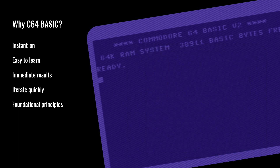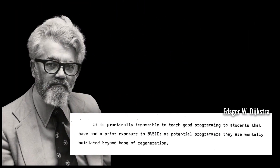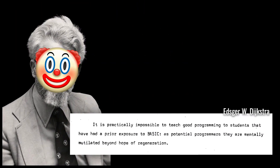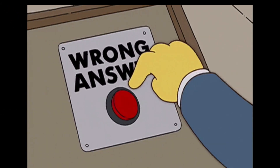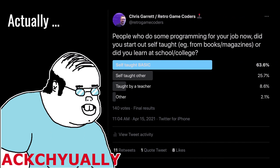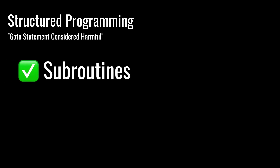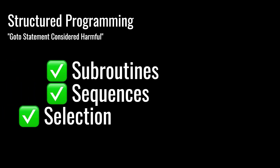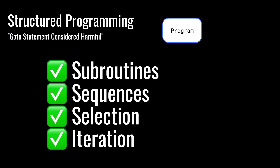A guy called Dijkstra said it's practically impossible to teach good programming to students that have had prior exposure to Basic. He's wrong. Most of us of a certain age did start with Basic — commercial programmers who do it for our day jobs, most of us self-taught. We might have started with the Commodore 64, the BBC, VIC-20, or the ZX81. We learned Basic and now we're professional programmers. It doesn't matter what age you are — learn Basic, you're a programmer.